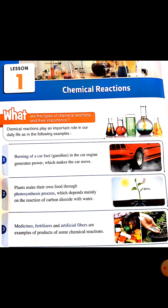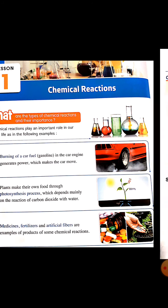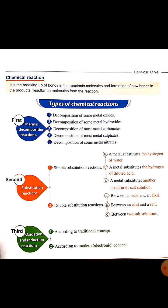So, what is a chemical reaction? A chemical reaction is the breaking up of bonds in the reactive molecules and the formation of new bonds in the products or result molecules from the reaction. So in a chemical reaction, there is formation of new bonds to get new products. It's not a mixture.